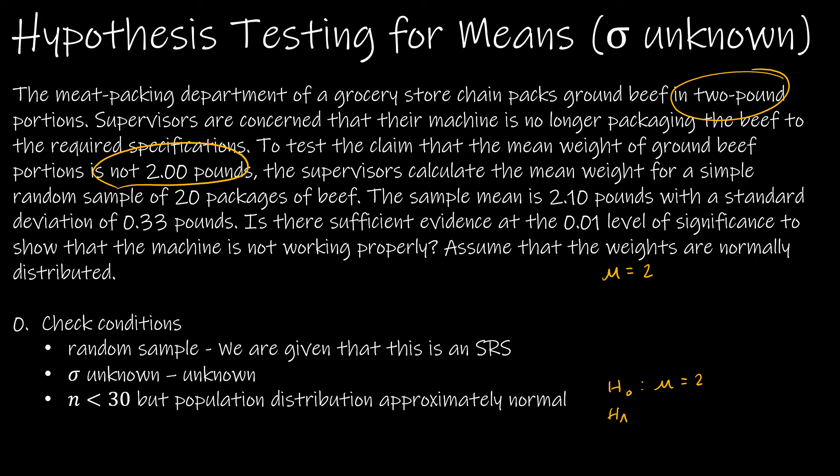The alternative hypothesis is that it's not two pounds, so they're not indicating a direction. They're just saying we don't think two is right, so that is the alternative hypothesis, and that is what makes this a two-tailed test.